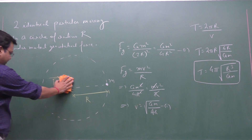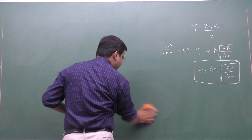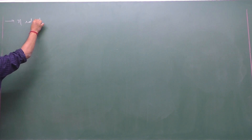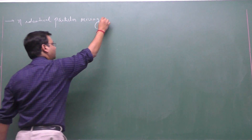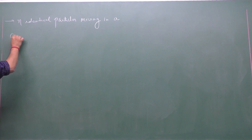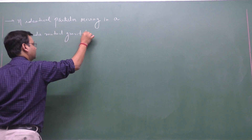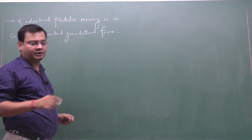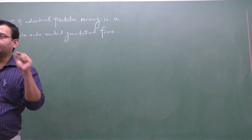Now suppose we take the case of three particles — three identical particles moving in a circle of capital R. The key point is: whenever we have n identical particles moving in a circle, by the property of symmetry each identical particle will be located at the vertices of an n-sided regular polygon inscribed in a circle.